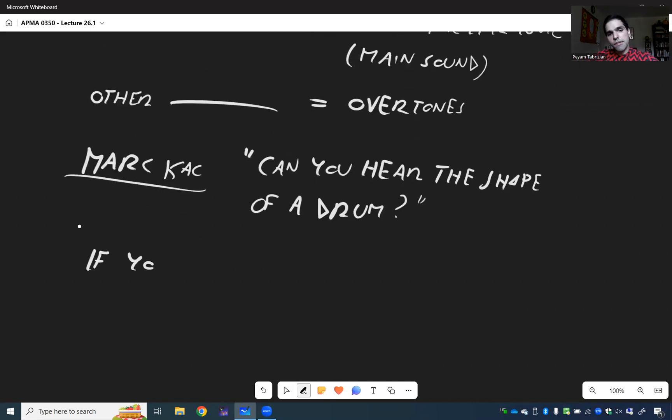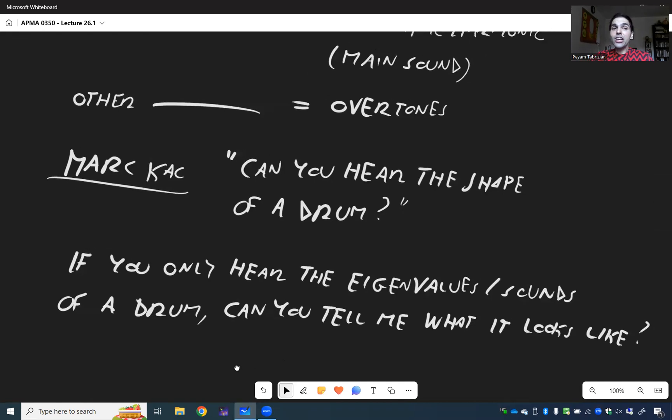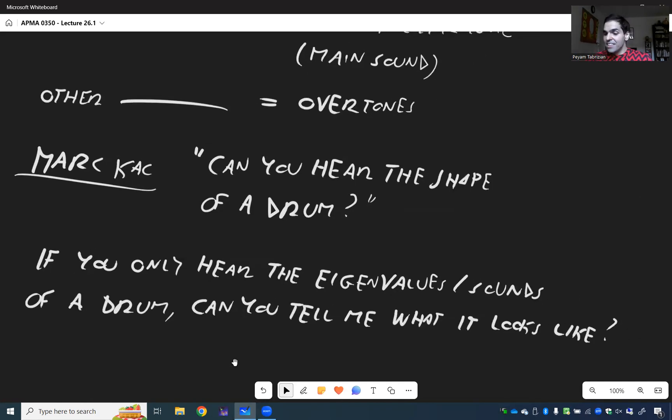In other words, once again, if you only hear the eigenvalues, the sounds of a drum, can you tell me what this geometric shape is? What it looks like? Can you reconstruct the drum from the sounds? Think about it. Is the answer yes or no?